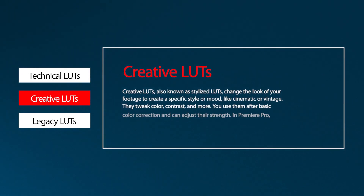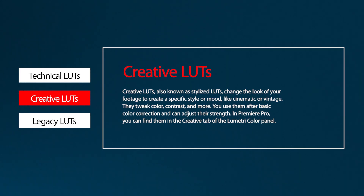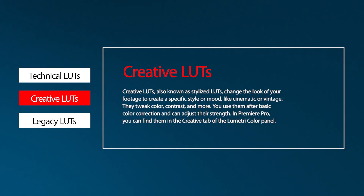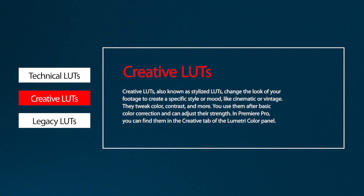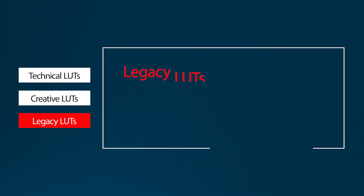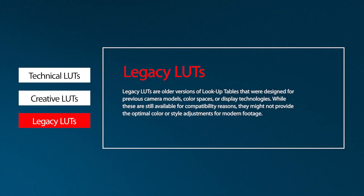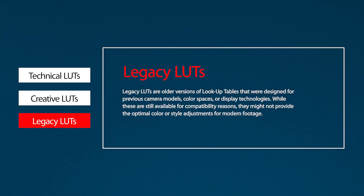Creative LUTs, also known as Stylized LUTs, change the look of your footage to create a specific style or mood like Cinematic or Vintage. They tweak color, contrast, and more. You use them after basic color correction and can adjust their strength. In Premiere Pro, you can find them in the Creative tab of the Lumetri Color panel. Legacy LUTs are older versions of lookup tables designed for previous camera models, color spaces, or display technologies. While they are still available for compatibility reasons, they might not provide the optimal color or style adjustments for modern footage.